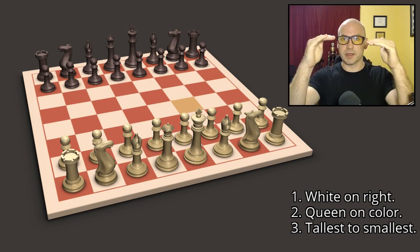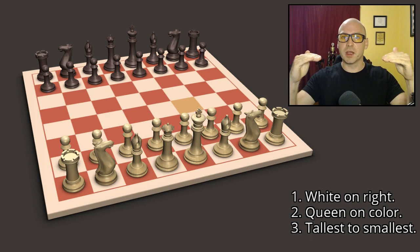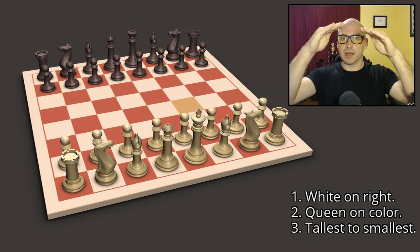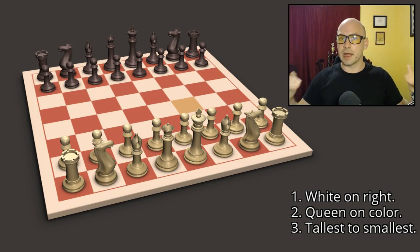The king and queen start in the middle and then bishops, knights and rooks. A nice gradation from tallest down to smallest on the edge. If you remember those three things you'll always get your chess board set up correct to begin the game.